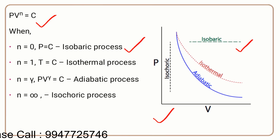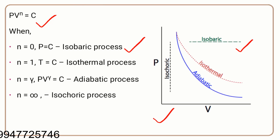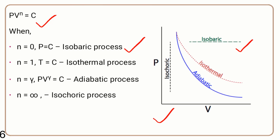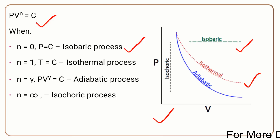If n is 0, that is the isobaric process. If n equals 1, then PV is equal to constant — from the gas equation, temperature is constant, that is the isothermal process. If n equals gamma, the adiabatic index, then PV raised to gamma is a constant — that is the adiabatic process.